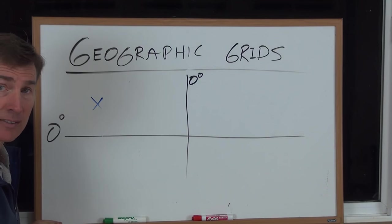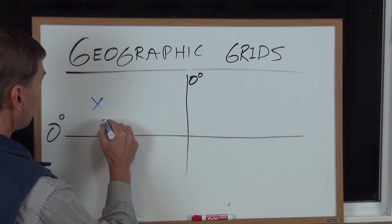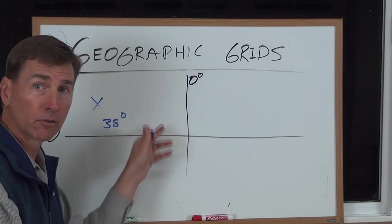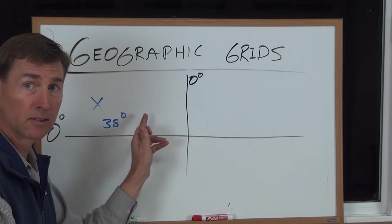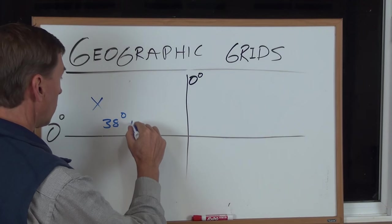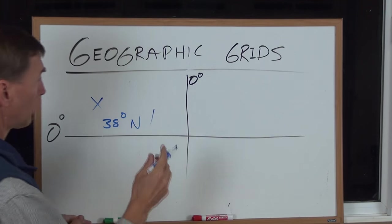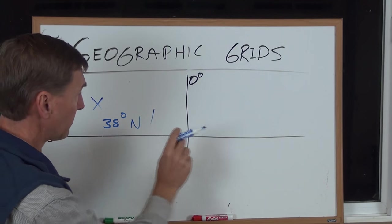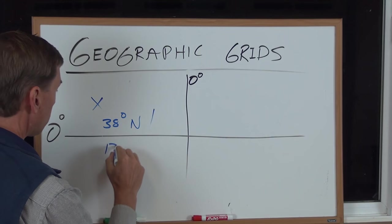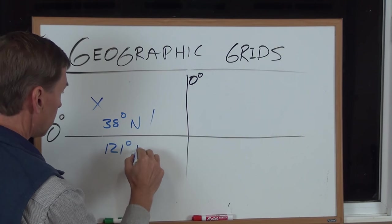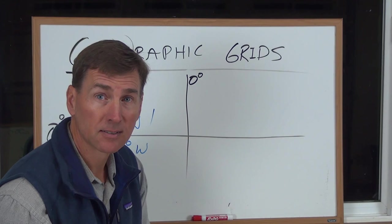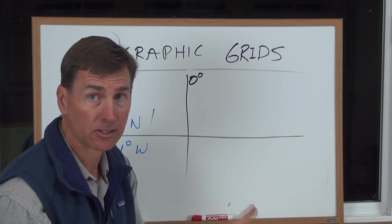So I live right there where the X is. So what that would be would be 38 degrees. Now is that north or south of this line? It's north, right? So that's north. And then you could say, okay, which side am I? Am I to the west? This is to the west. That's to the east. And that happens to be 121 degrees to the west. You can break that down further into minutes and seconds. I'm not going to do that here.